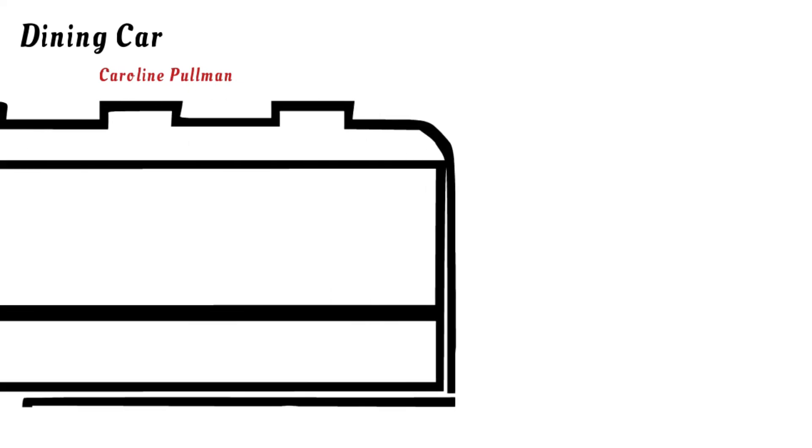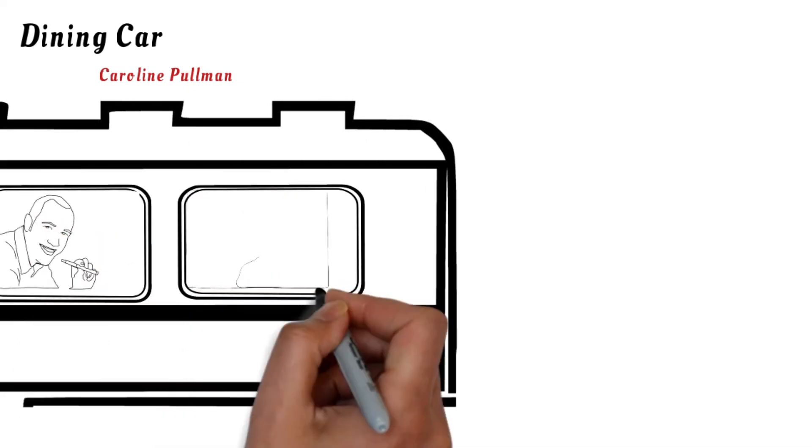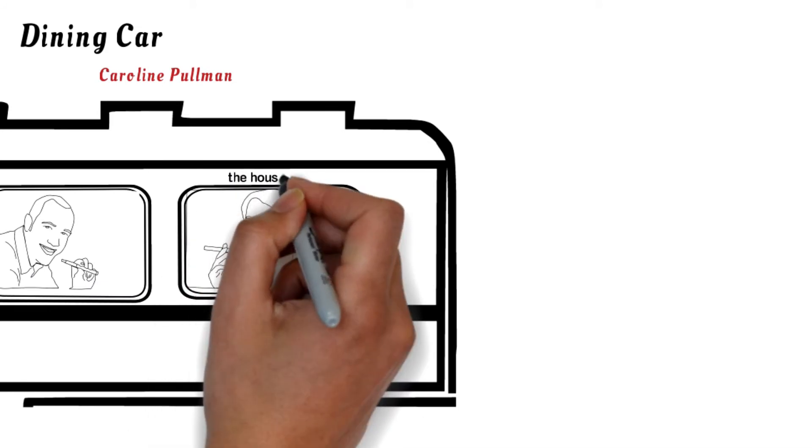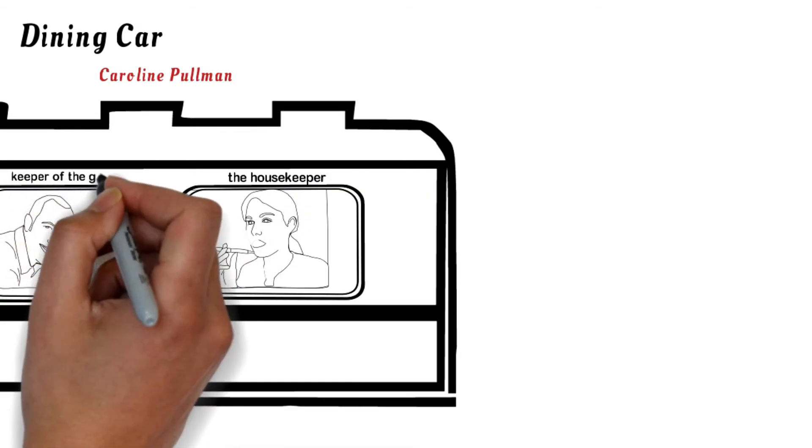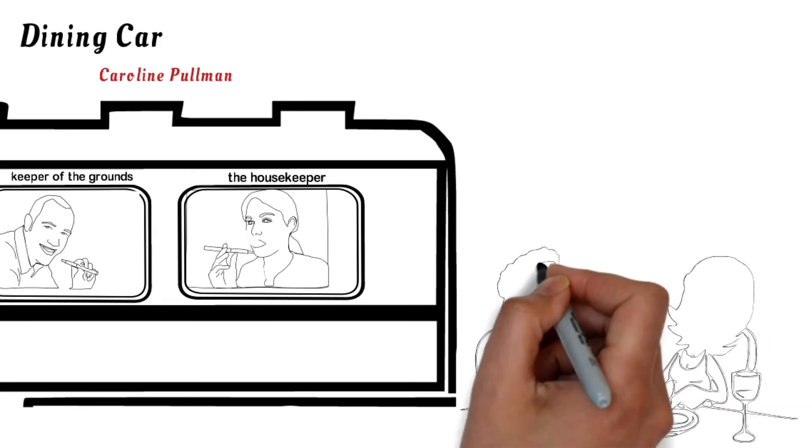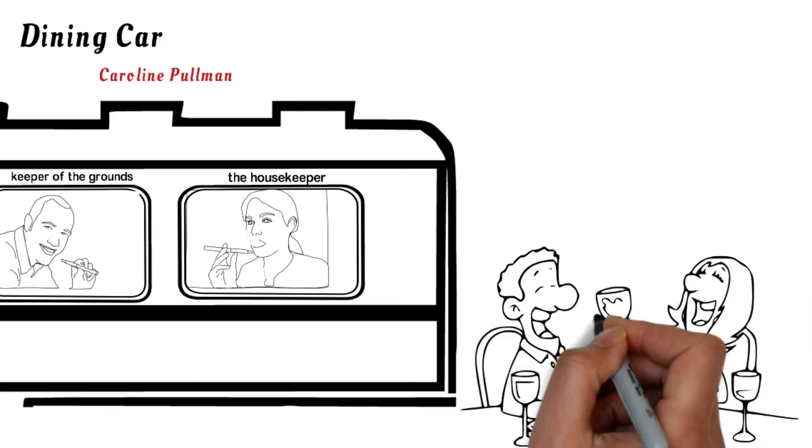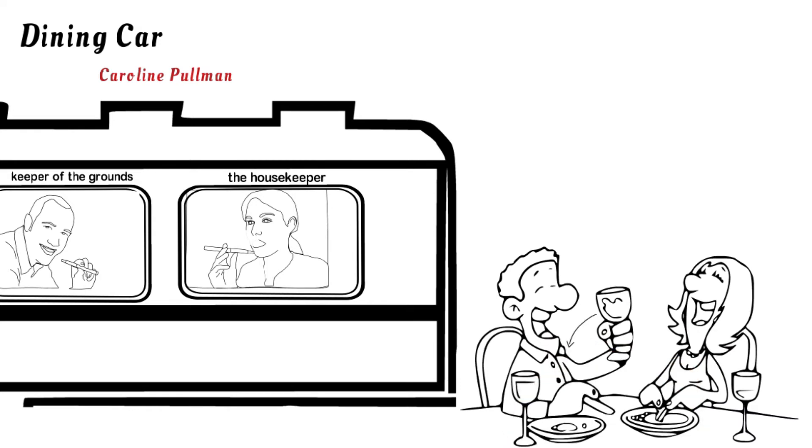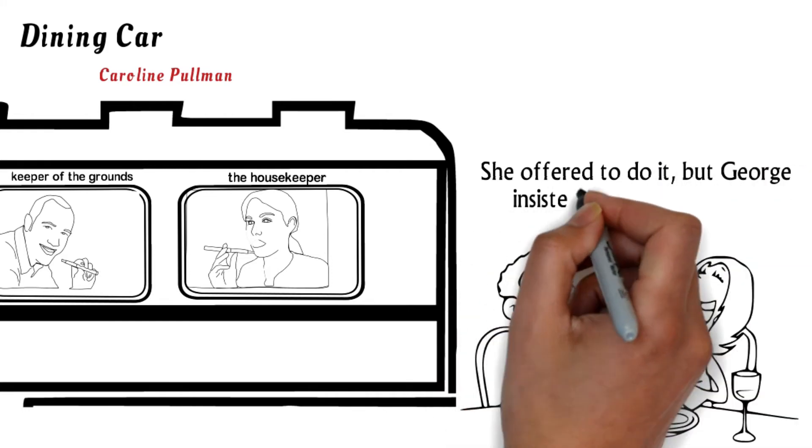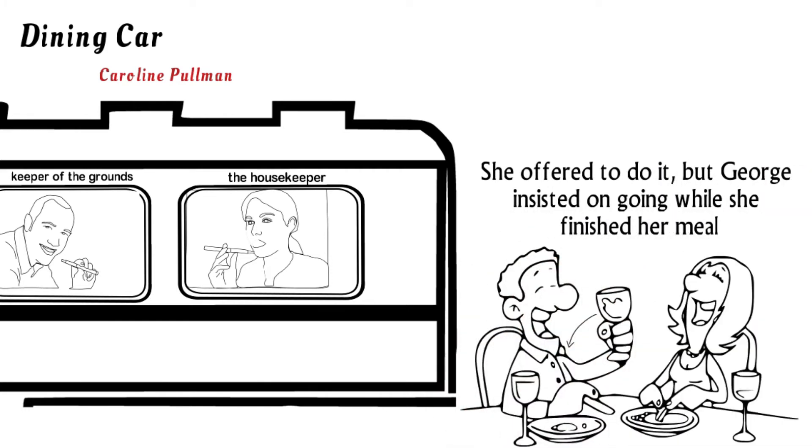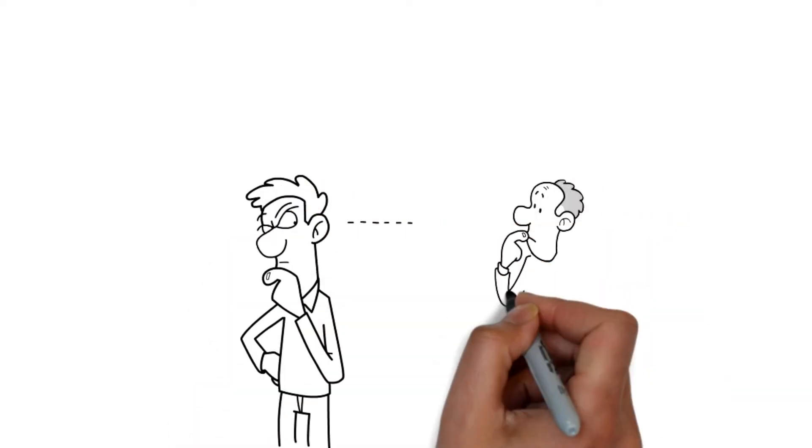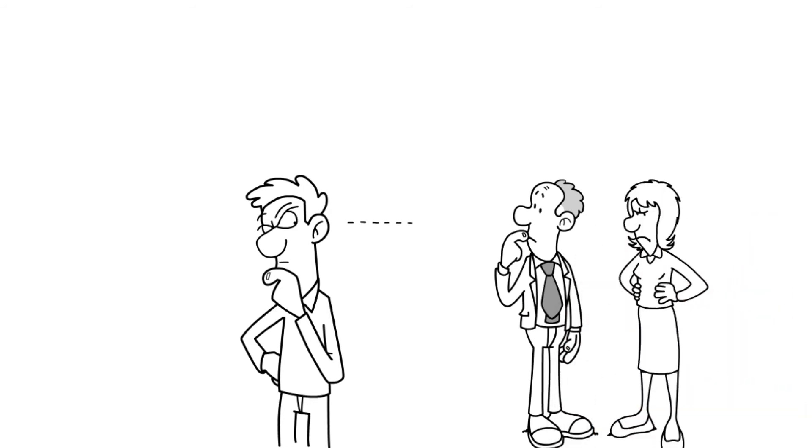Once you make it to the dining car, you'll meet with Caroline Pullman, a young maid on her way to a new assignment. She and her husband George, who had left moments earlier to smoke, are on their way to a wealthy woman's estate. She will be the housekeeper and he will be the keeper of the grounds. Mrs. Pullman says that her husband went back to the room in the sleeping car to wash up after supper. He had spilled wine on his shirt and wanted to tend to it before the stain set in. She offered to do it but George insisted on going while she finished her meal. She says they did not know Mr. Gruber but he was staring at her husband strangely when they boarded the train.